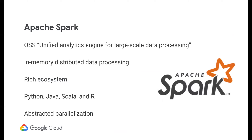Now on the website — spark.apache.org — Spark is described as an open source unified analytics engine for large-scale data processing. One of the big pieces here is that the processing happens in memory and distributed. All of your data is essentially loaded into the memory of the machines that Spark is running on, the processing happens there, and then it's written back to disk — instead of doing constant reads and writes to disk, which take up a tremendous amount of computational time and resources.